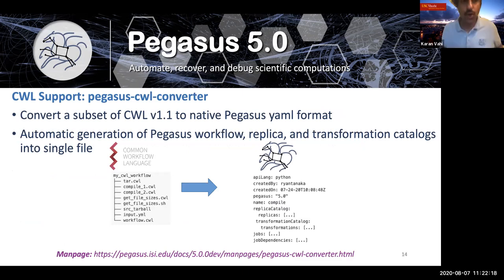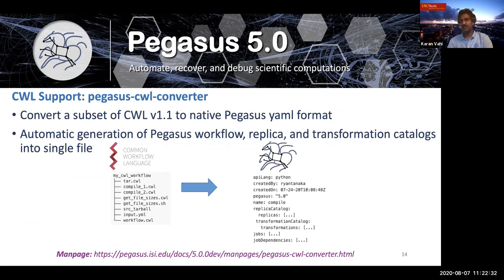We've also looked at the Common Workflow Language for 5.0. With 5.0 we've introduced a new standalone command line client called Pegasus CWL converter, which converts a subset of CWL version 1.1 to native Pegasus YAML formats. The aim is to work with users who have existing workflows described in CWL but want to use Pegasus to execute and manage them. More details are available on the man page, and we'll also be introducing a standalone documentation chapter in the new user guide about running CWL workflows with Pegasus 5.0.